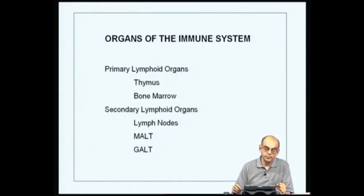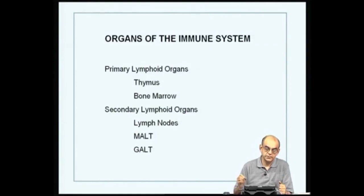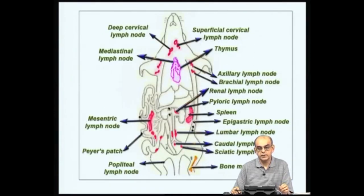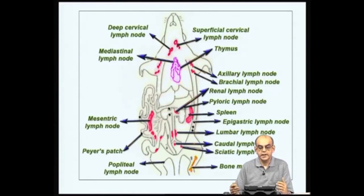As we went into this in the last lecture, the organs of the immune system have the thymus and the bone marrow as primary lymphoid organs, and the various lymph nodes associated with mucosal surfaces — like the mucosal associated lymphoid tissue and the gut associated lymphoid tissue — that make up the secondary lymphoid organs. We also went through how these different lymph nodes were distributed in various parts of the body, so that immune reactions against antigens entering at various locations could be facilitated.